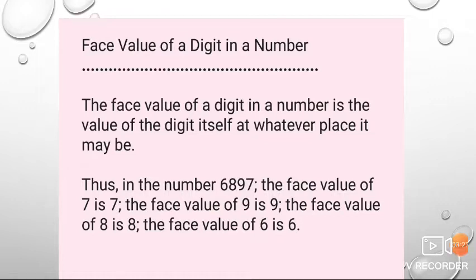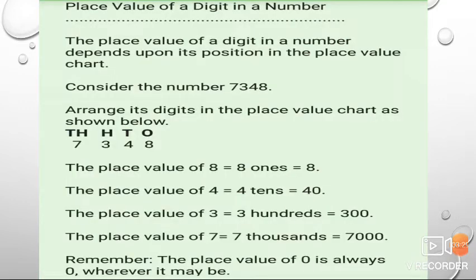The face value of 6 is 6. Now, moving towards our next topic: place value of a digit in a number. The place value of a digit depends upon its position in the place value chart. Consider the number 7,348. First of all, arrange them in the form of a place value chart as shown below. From there, you will be able to find out the correct position of each digit.